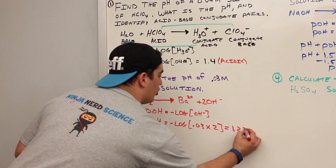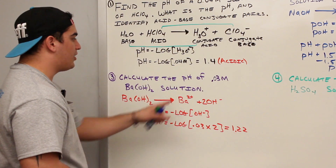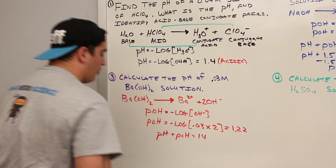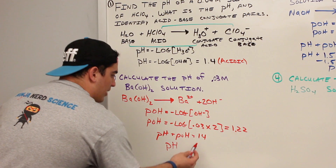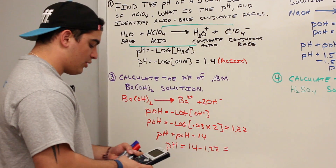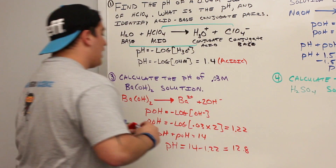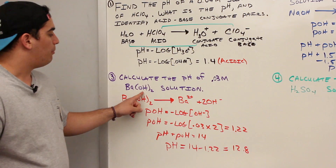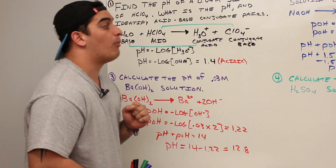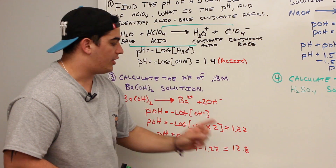We're still not done — the question asks for pH, not pOH. Using pH + pOH = 14: pH = 14 − 1.22 = 12.78, which we round to 12.8. This makes sense because we're dealing with a strong base approaching 14 on the pH scale. Comparing this to sodium hydroxide, which gave us 12.45, barium hydroxide should be more basic because we're accounting for two hydroxide ions per formula unit versus only one for sodium hydroxide.